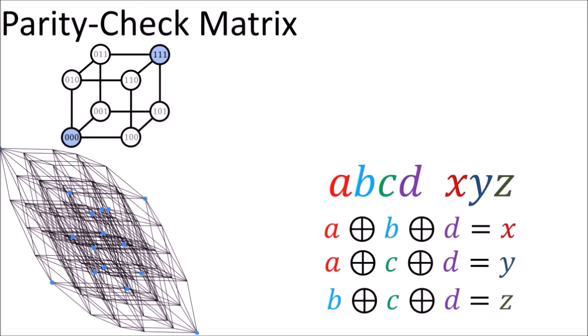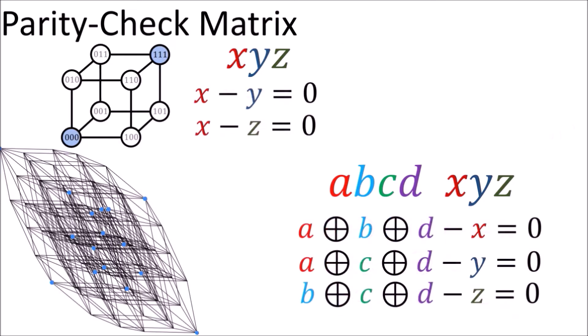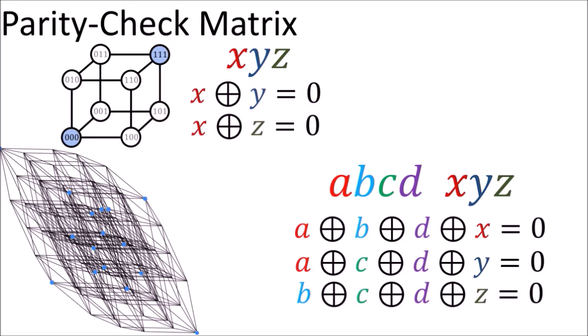To construct the parity check matrix, we start with the equations for the parity check bits. You're familiar with the equations for the Hamming 7-4 code, and for the 2-of-3 repetition code, we just repeat the first bit — so if the bits are x, y, z, the y and z bits are just equal to x. Next, we move the right-hand side of the equations over to the left-hand side using subtraction. But since we're dealing with binary, subtraction is just the same thing as exclusive OR.